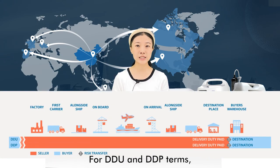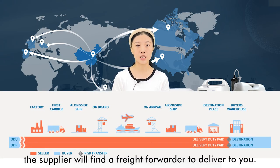For DDU and DDP terms, the supplier will find a freight forwarder to deliver to you. The only difference between these two terms is whether the supplier needs to pay import duties.